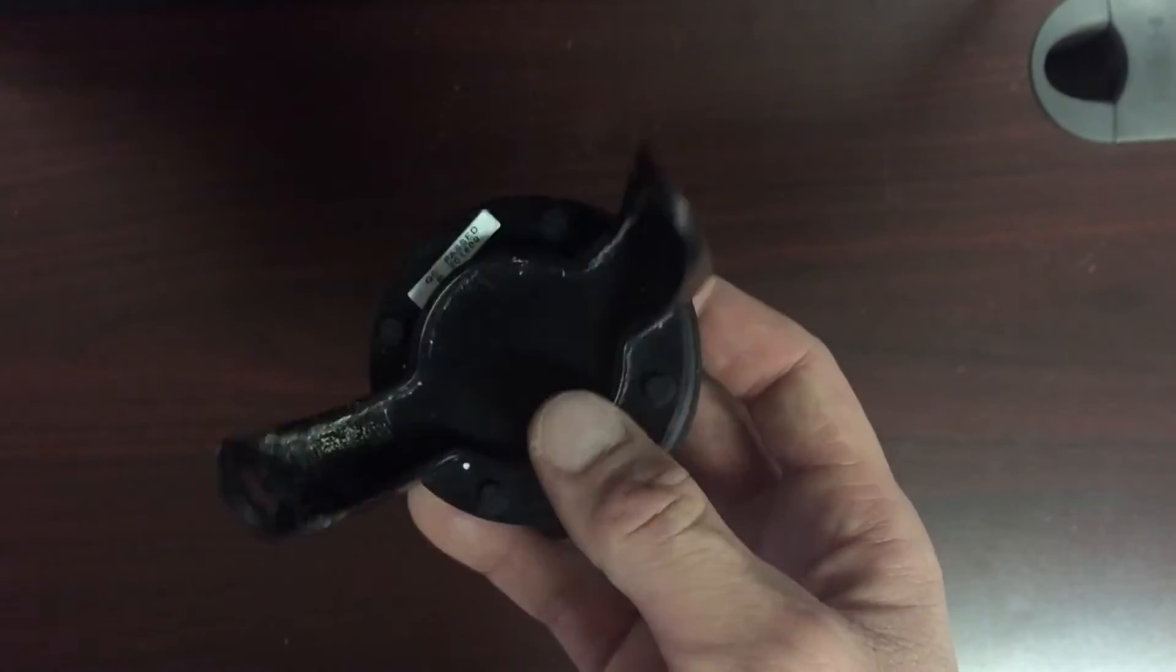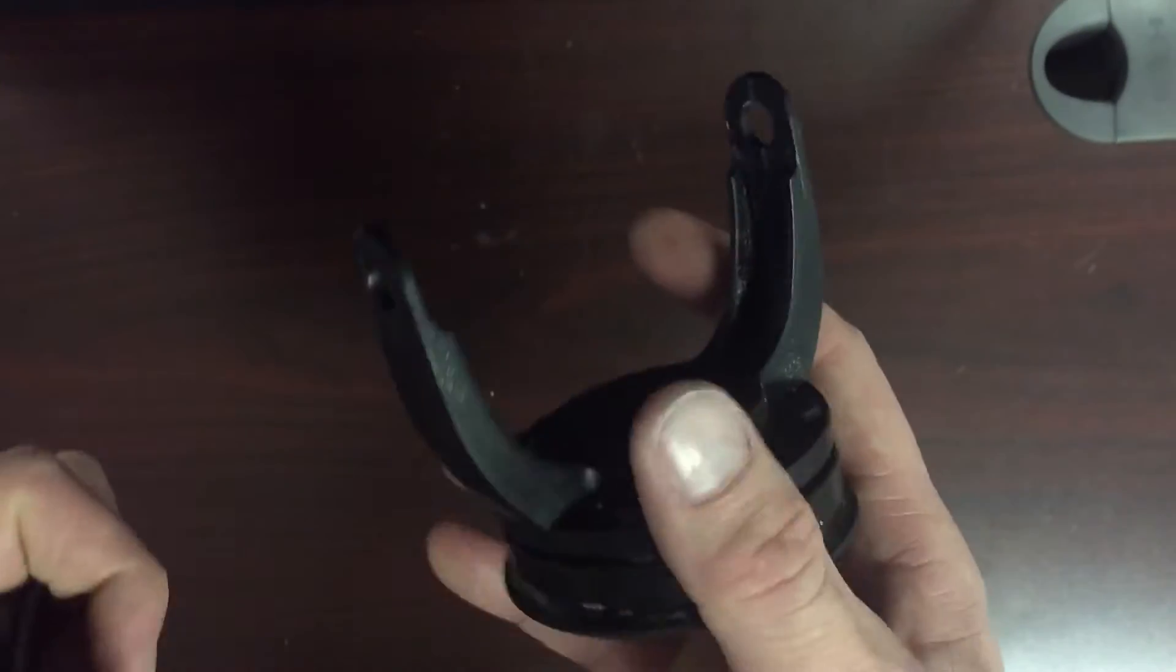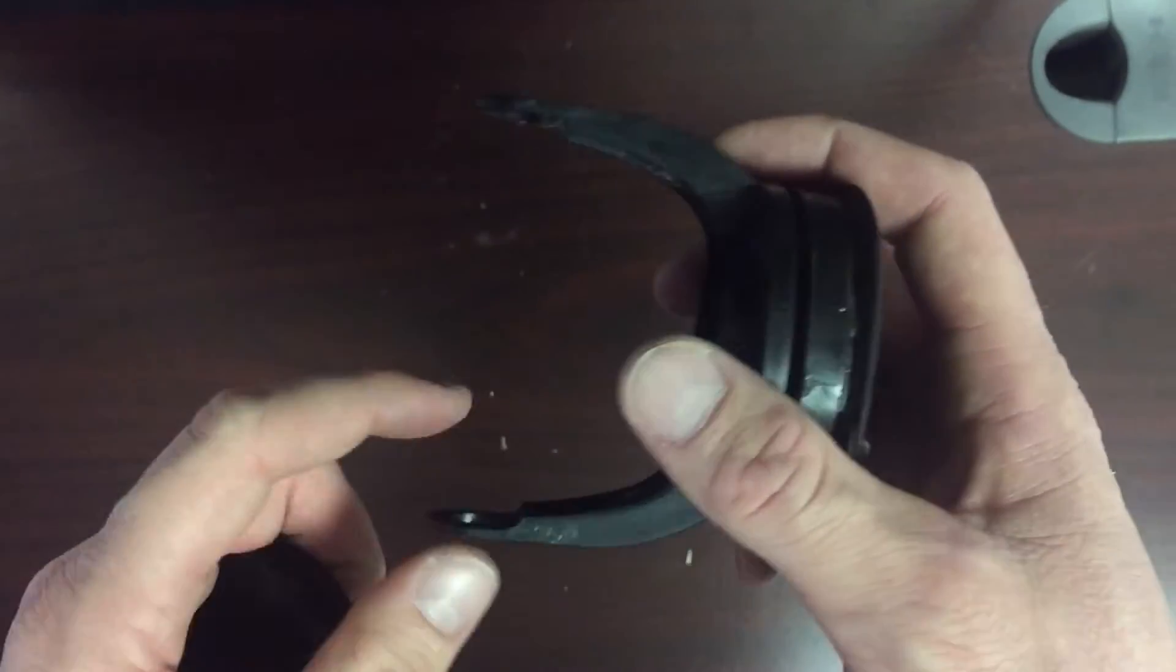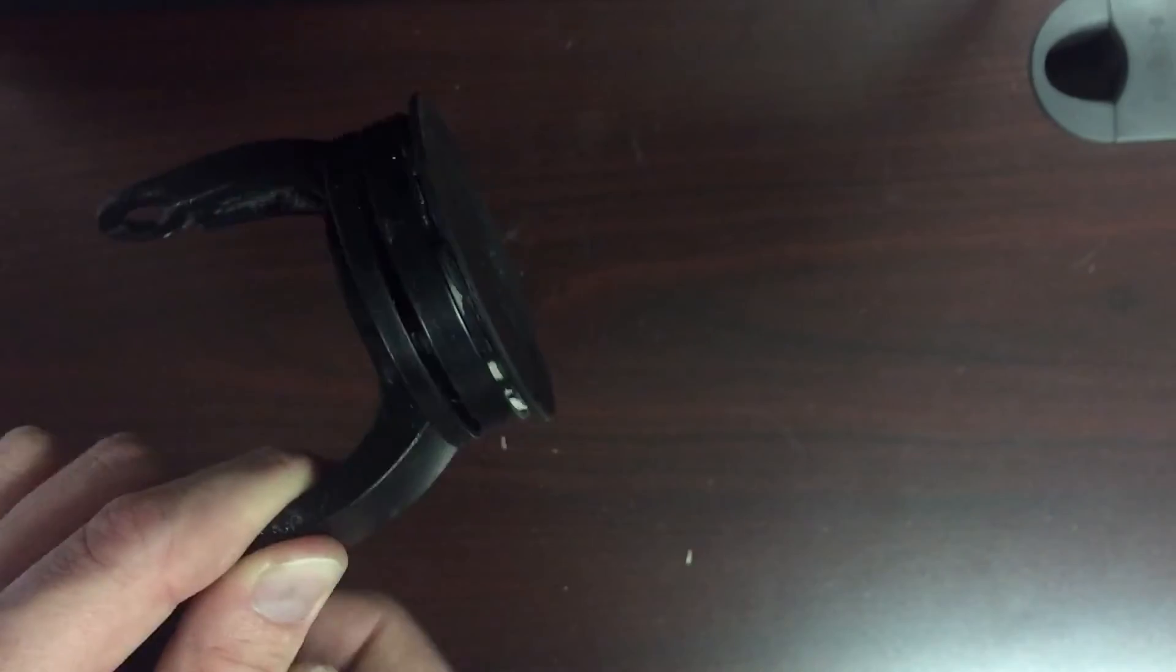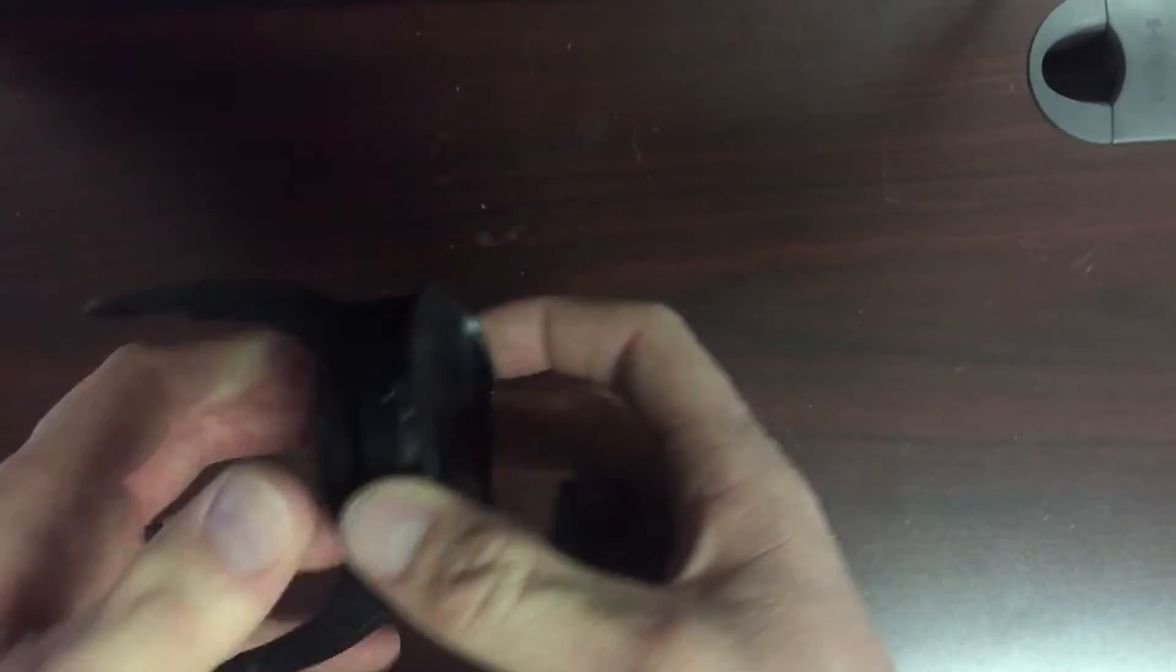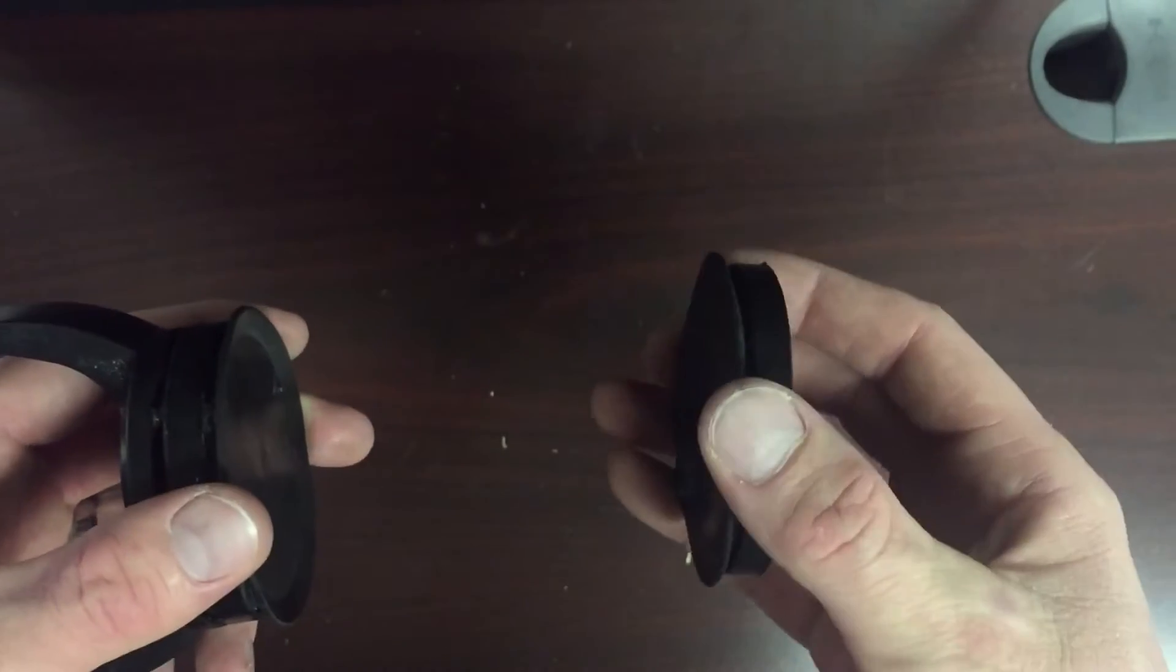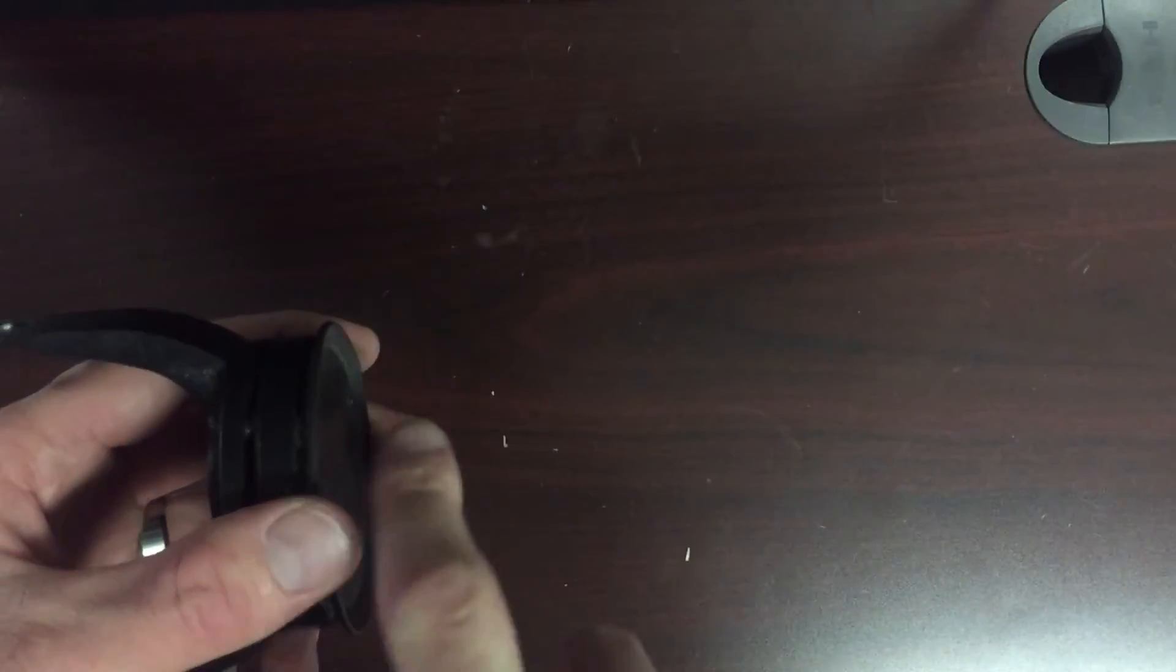Basically, this is the base. The pump would connect here and stick out this way. This would stick to the glass, and then you would have this magnet here that sticks to the other side of the glass. Imagine there's a piece of glass here.